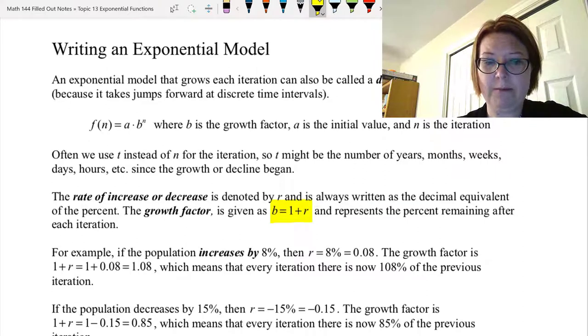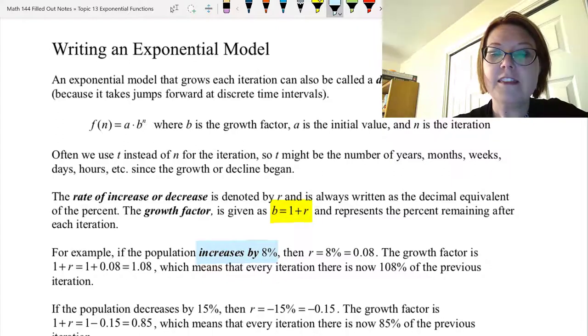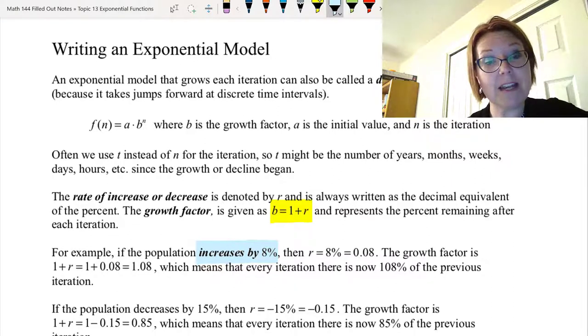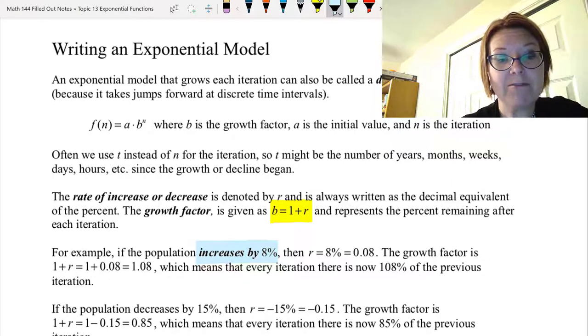Let's look at two examples. For example, if the population increases by 8%, then our r value would be the 8%, or 0.08, whenever we do it with any math.